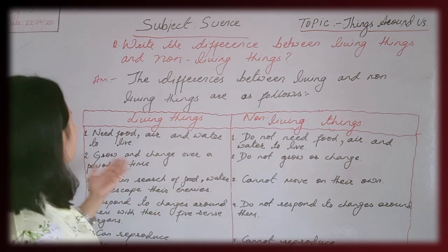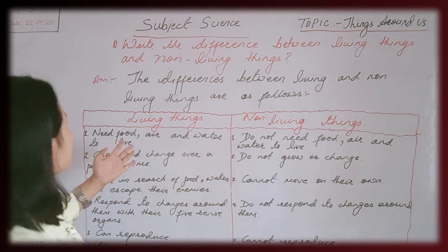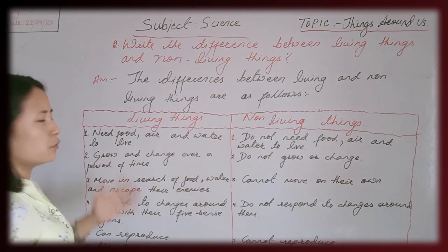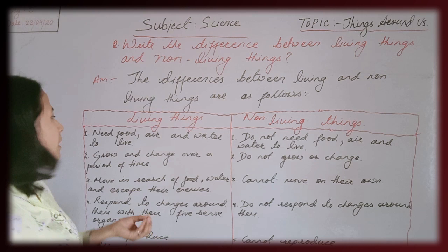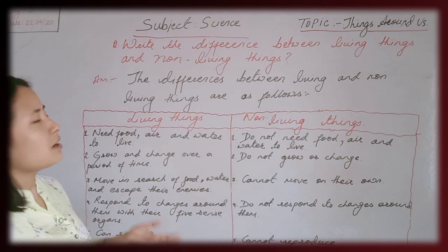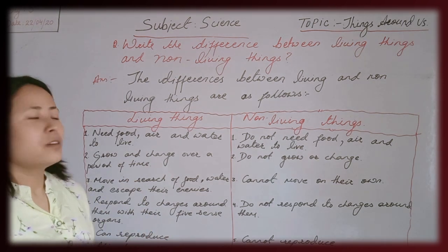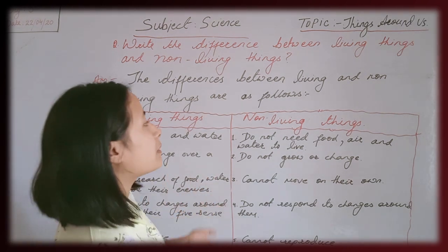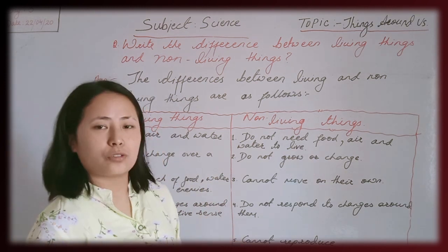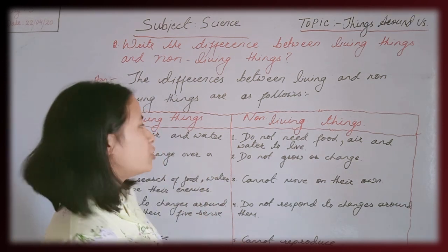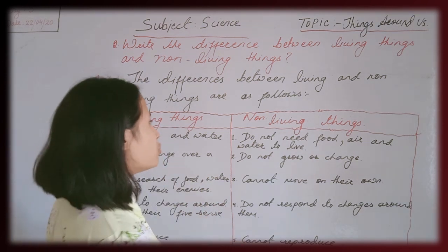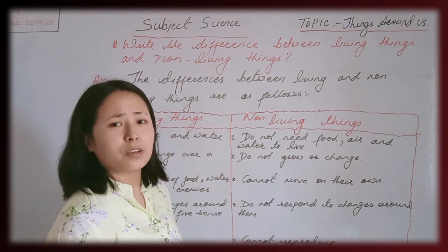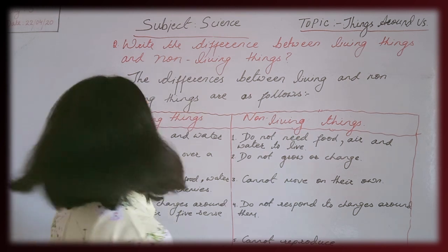For example: air, water, food — khana, paani, hawa. And non-living things — whatever is non-living — they don't need any of these things.